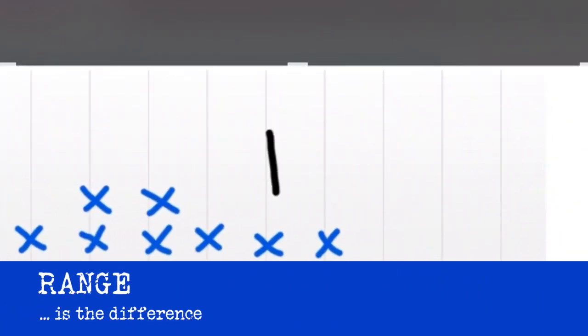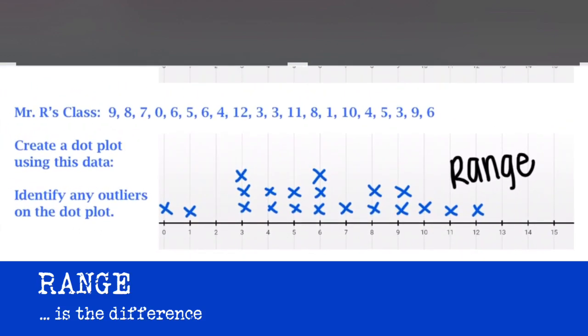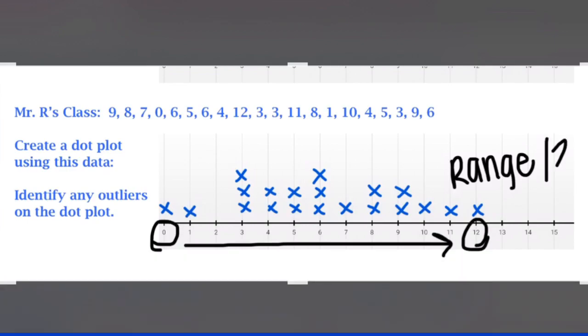Let's also find the range of the data. The largest data point here was 12, and the smallest was 0. So in Mr. R's class, we have a range of 12.